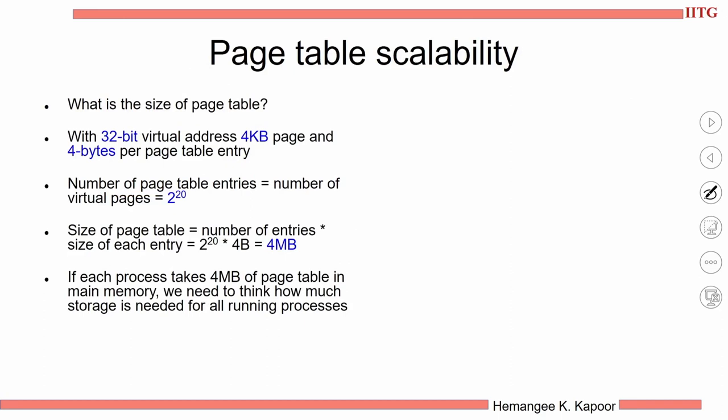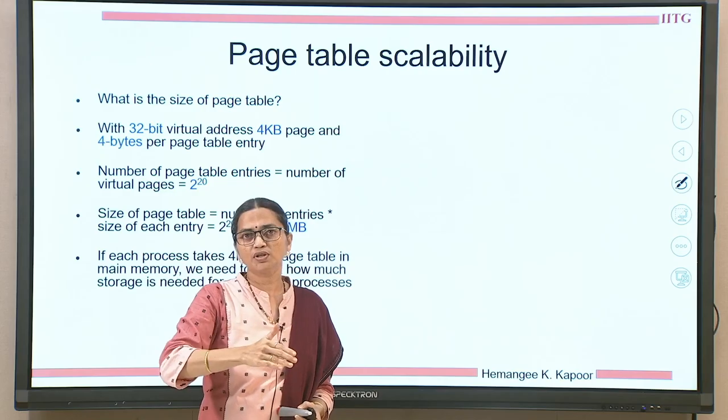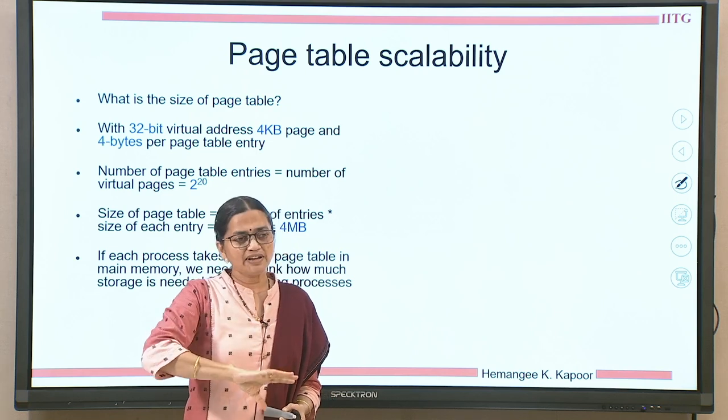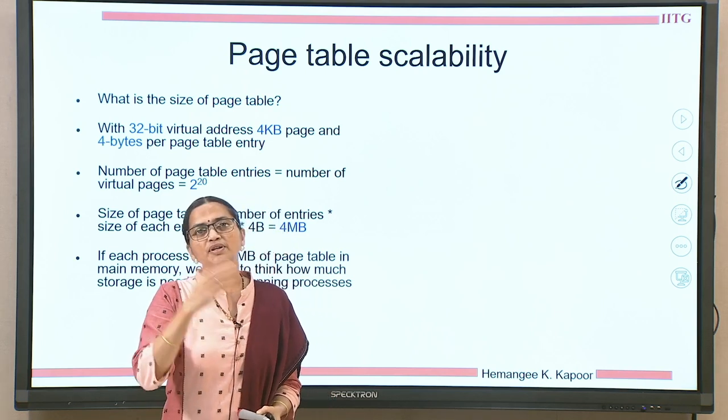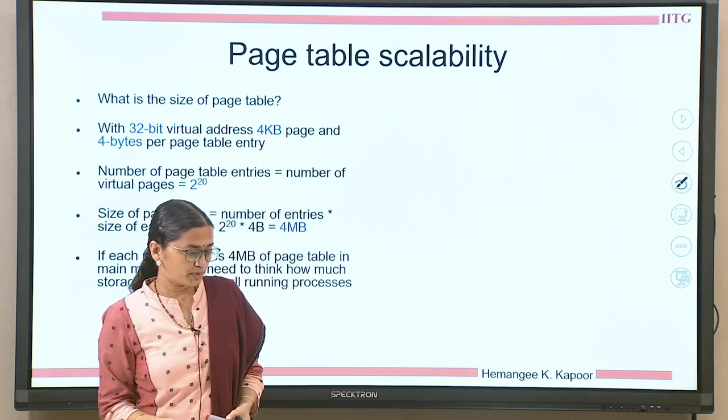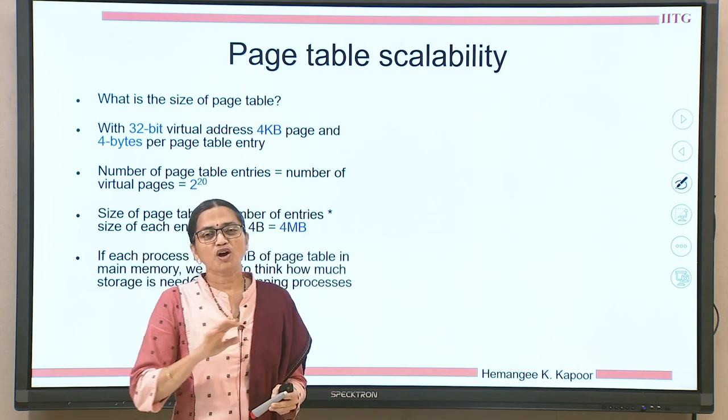If you are removing a page from the RAM, keep it back to the swap and bring the new page from the swap space to the RAM. That is how a page table is managed: valid bit 1 means the page is present; valid bit 0 gives the disk location. The OS takes care of bringing the page back from the swap space to the RAM and evicts a victim from the RAM to the swap space.